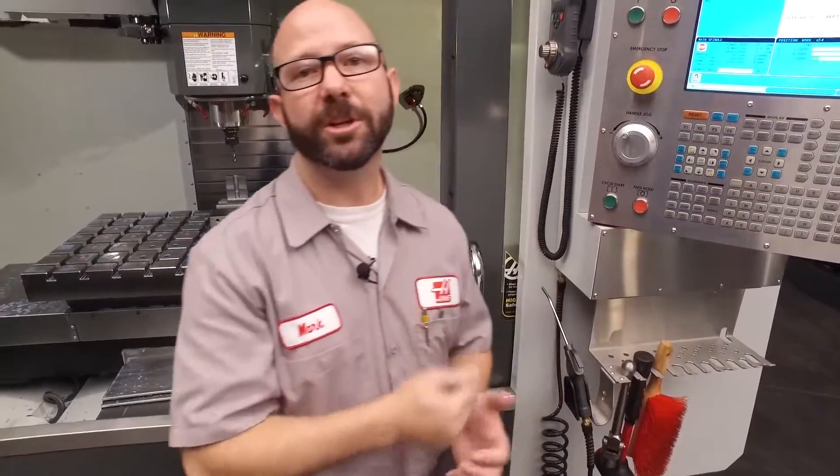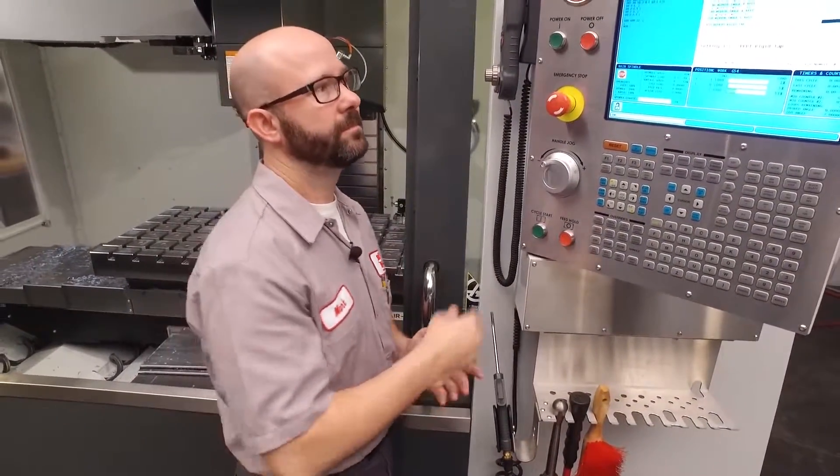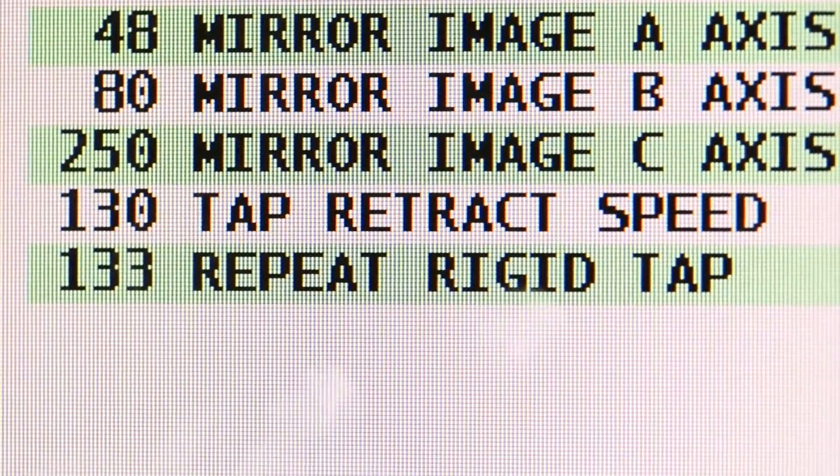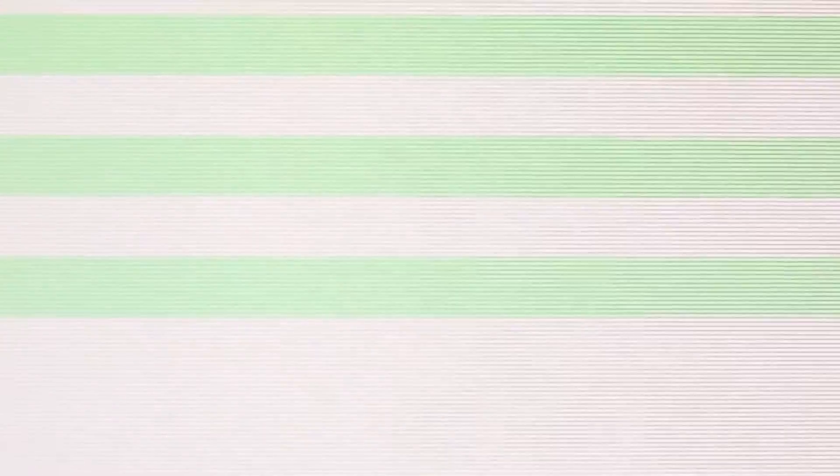Before we can peck tap, we have to turn a setting on at the control. Setting 133, repeat rigid tapping, needs to be set to on.